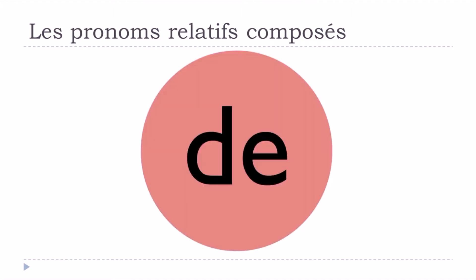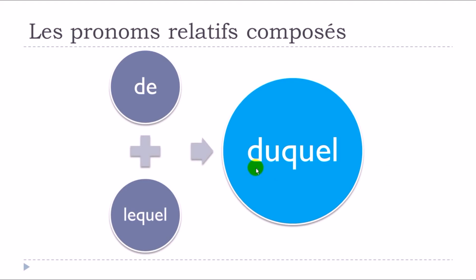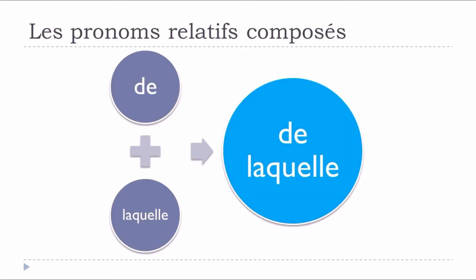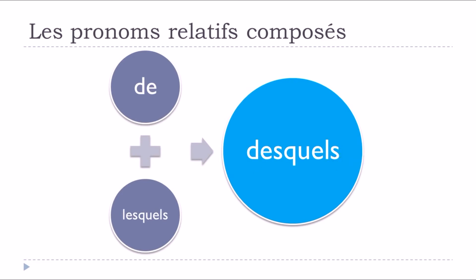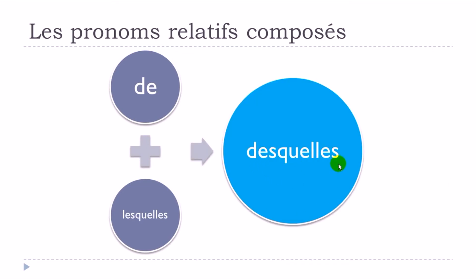Now let's see how it works with the preposition de. For the masculine singular form, de plus lequel will become duquel. For the feminine form, good news — it doesn't change, so it stays de laquelle. But for the masculine plural, it will become desquels. And for the feminine plural, it becomes desquelles. Phonetically it's the same as the masculine plural, but you write it differently — you get this double 'les'.